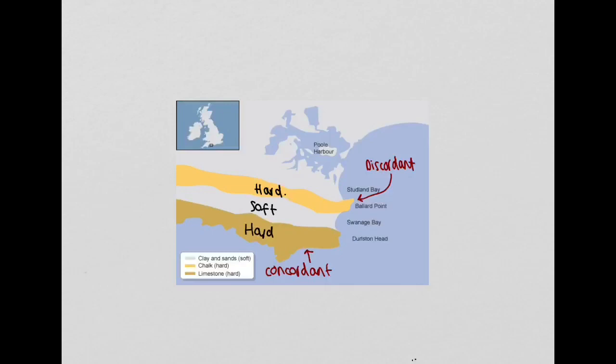Therefore we get more features and more landforms develop along a discordant coastline than a concordant coastline, particularly with regards to headlands and bays.